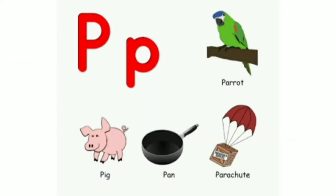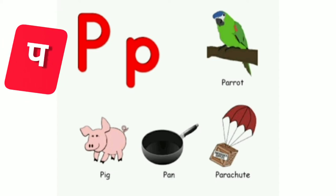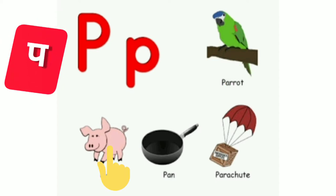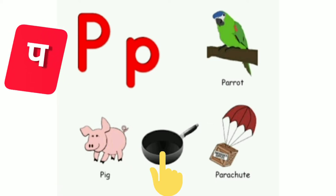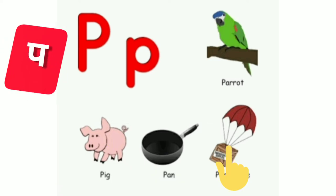Next word is P. P sound is P. Parrot. Pig. Pen. Parachute.